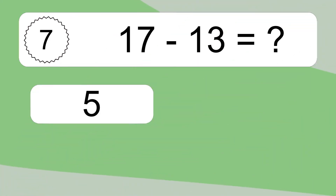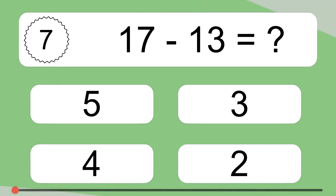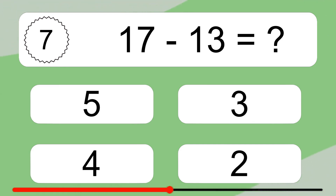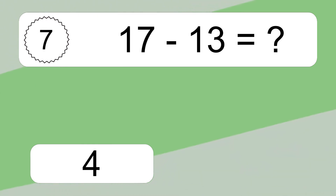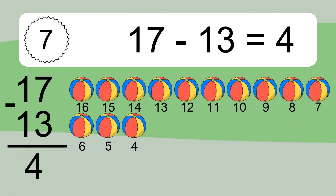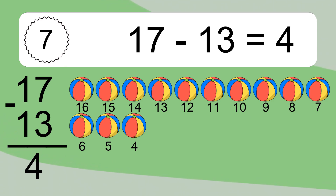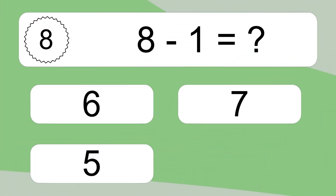17 minus 13 equals what? 17 minus 13 equals 4. Let's count it: 16, 15, 14, 13, 12, 11, 10, 9, 8, 7, 6, 5, 4.